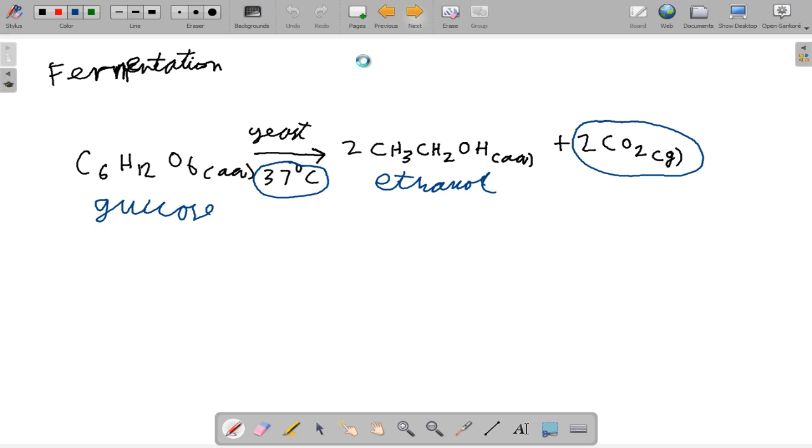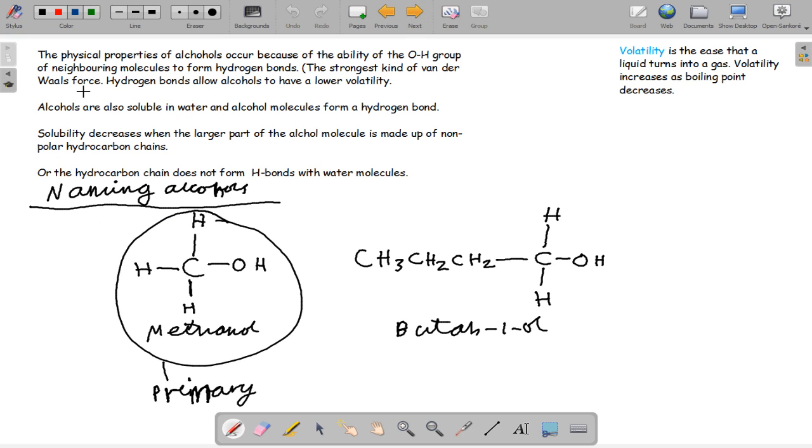So we move on now to the physical properties of alcohols. Quick definition: volatility is the ease that a liquid turns into a gas. Volatility increases as the boiling point decreases.